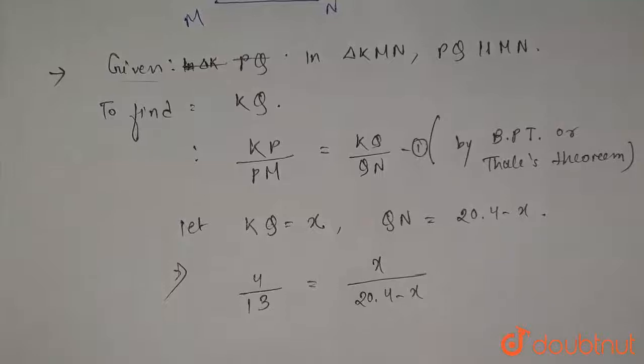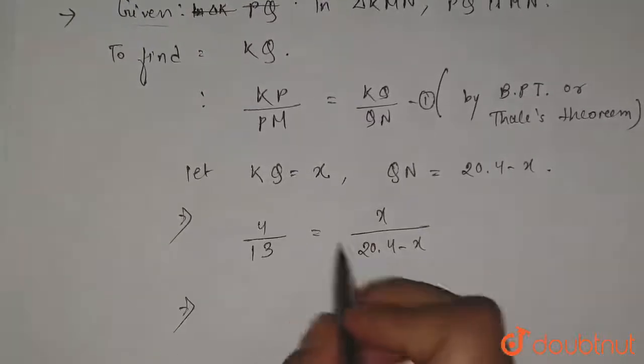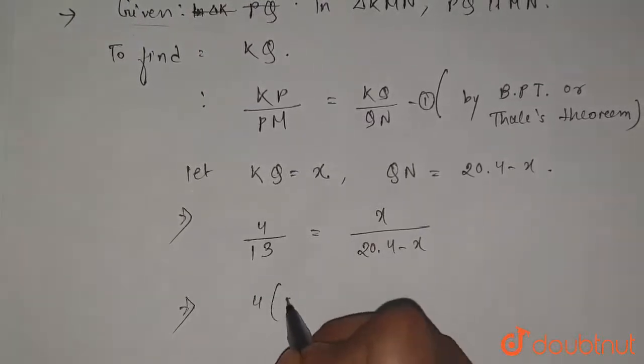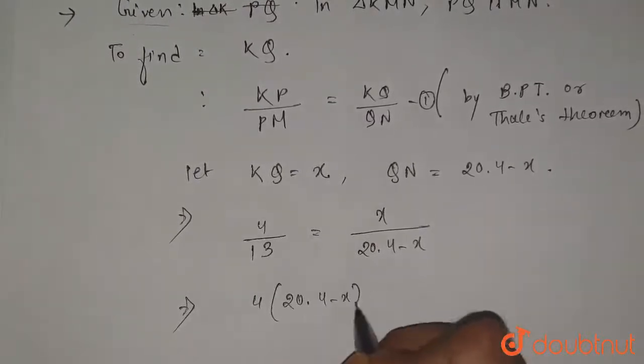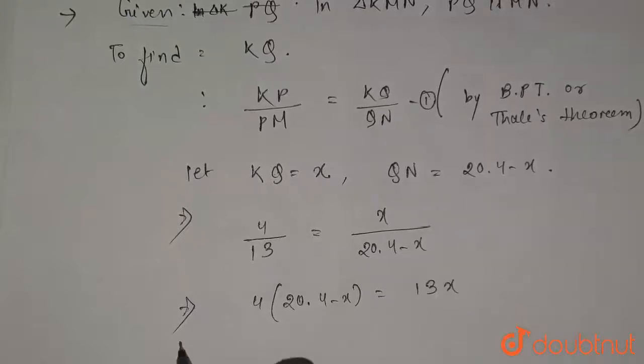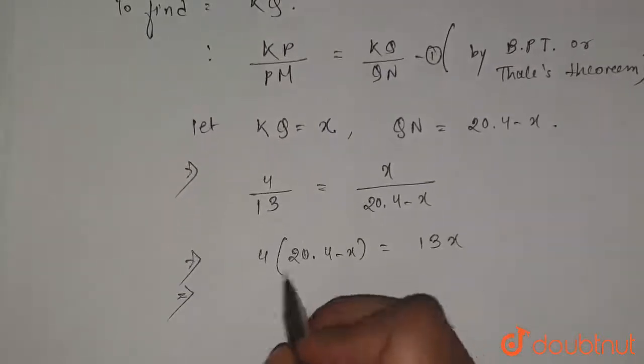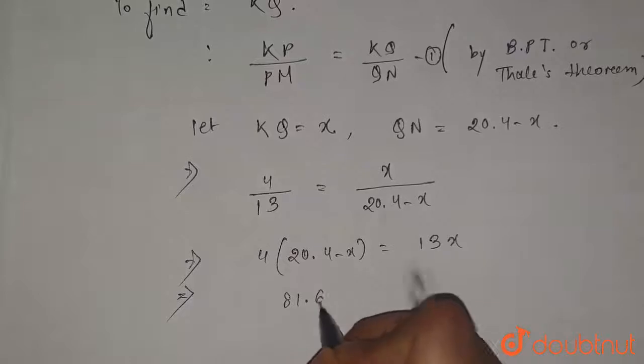So from here we can cross multiply. This will be 4 times 20.4 minus x equals 13x. So from here if you multiply, this will be 81.6 minus 4x equals 13x.